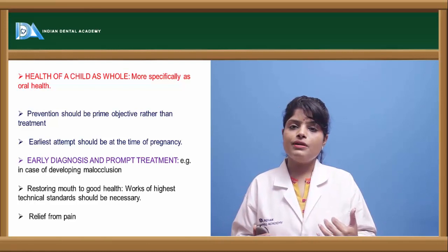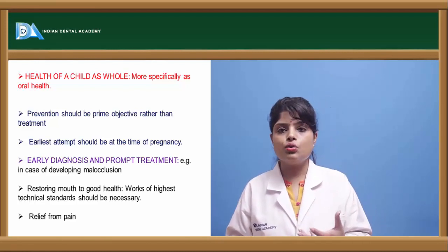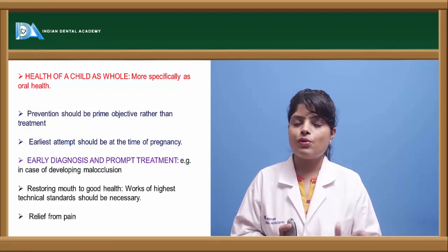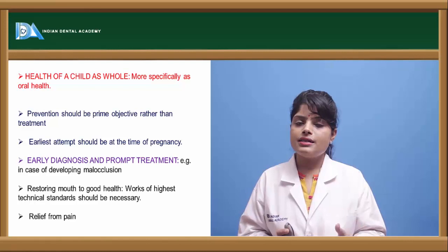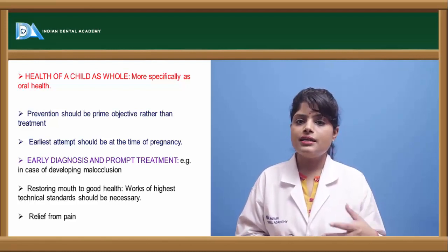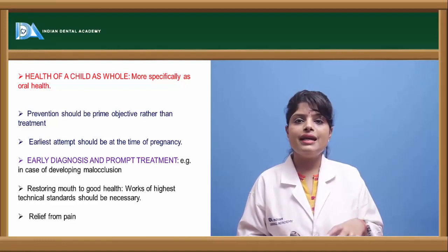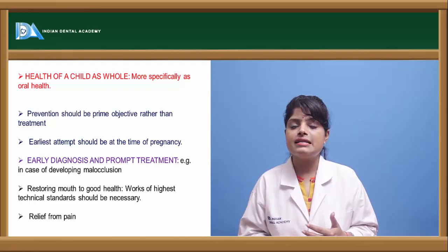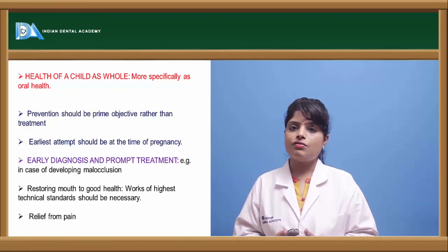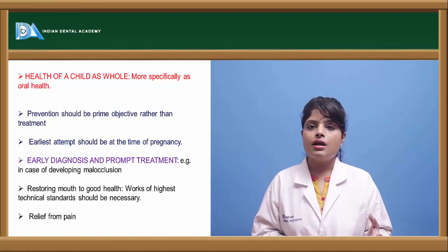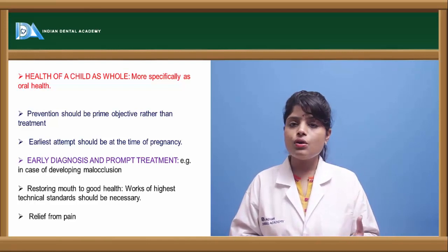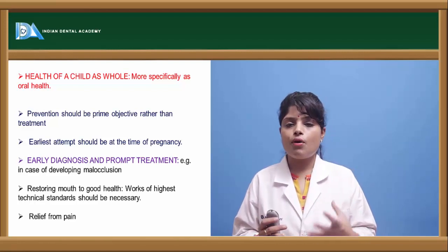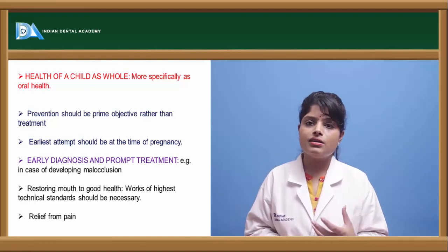Prevention rather than treatment is the first priority — before the development of disease, preventive measures should be taken to prevent the disease from occurring. All diseases should be addressed at the earliest attempt. Even prenatal dental care should be given to mothers so that future children have less risk of dental caries, because studies show that children of Streptococcus mutans-affected mothers have a high probability of caries. So even prenatal care is important for mothers.